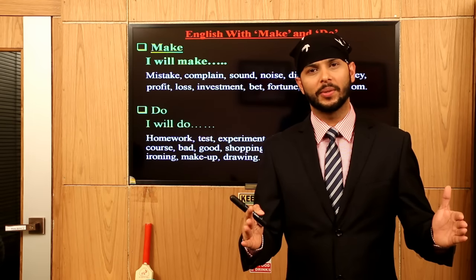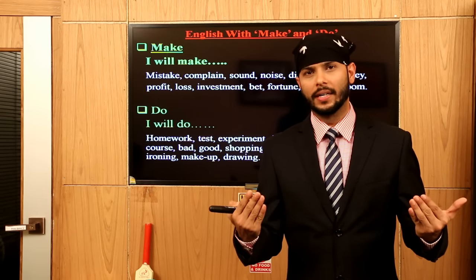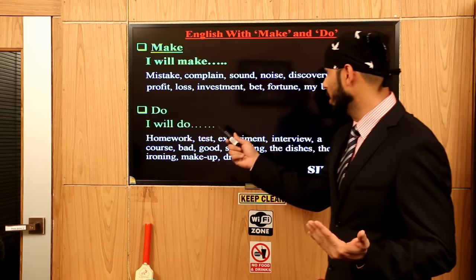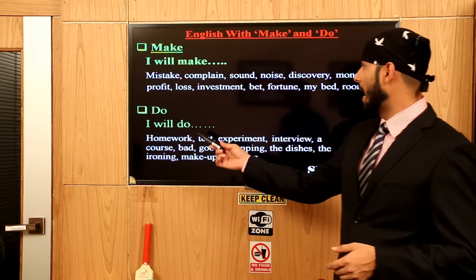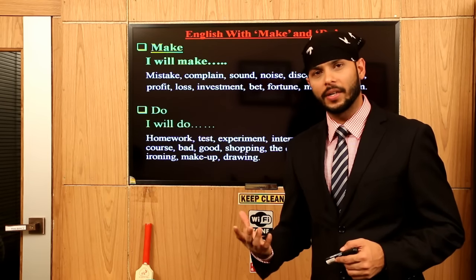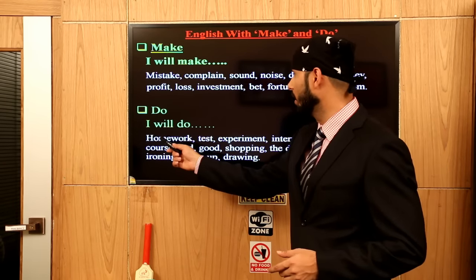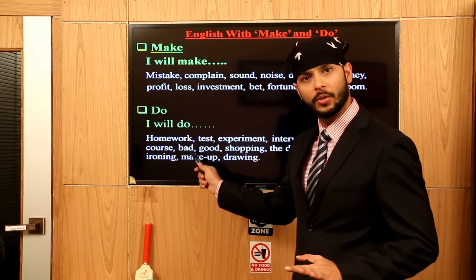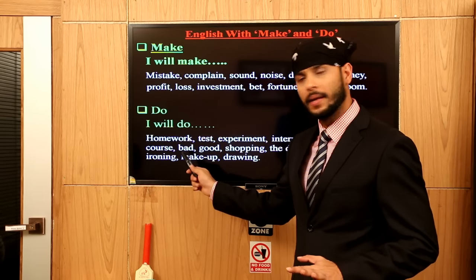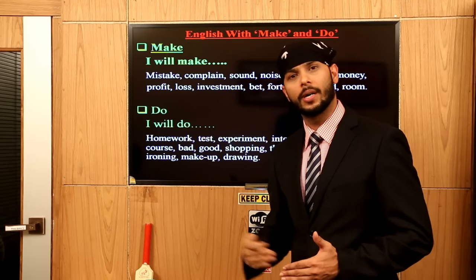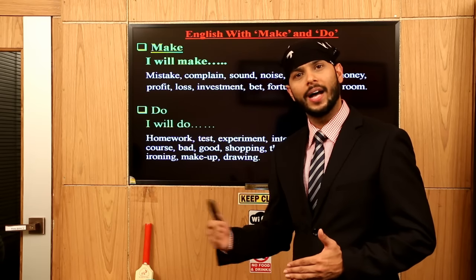Past tense or present tense — I hope you are really learning all these things. Now, 'do' — what would you use? I will do homework. I want to give you homework. I can give you homework and I will do homework. The only correct form is 'I will do homework.' I did homework.